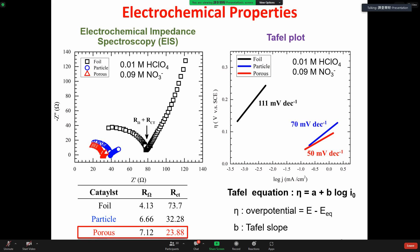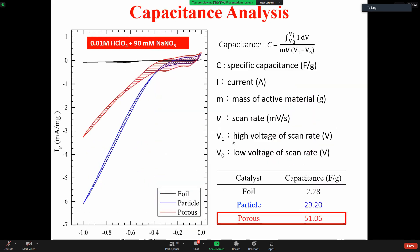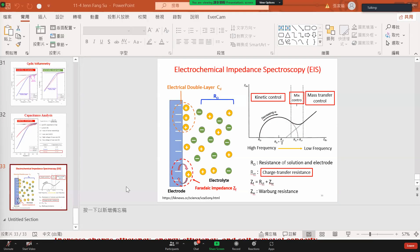You mean the EIS figures? So for the circle one, that means diffusion control. Sorry, hold on a second. I prepared a slide for this one.